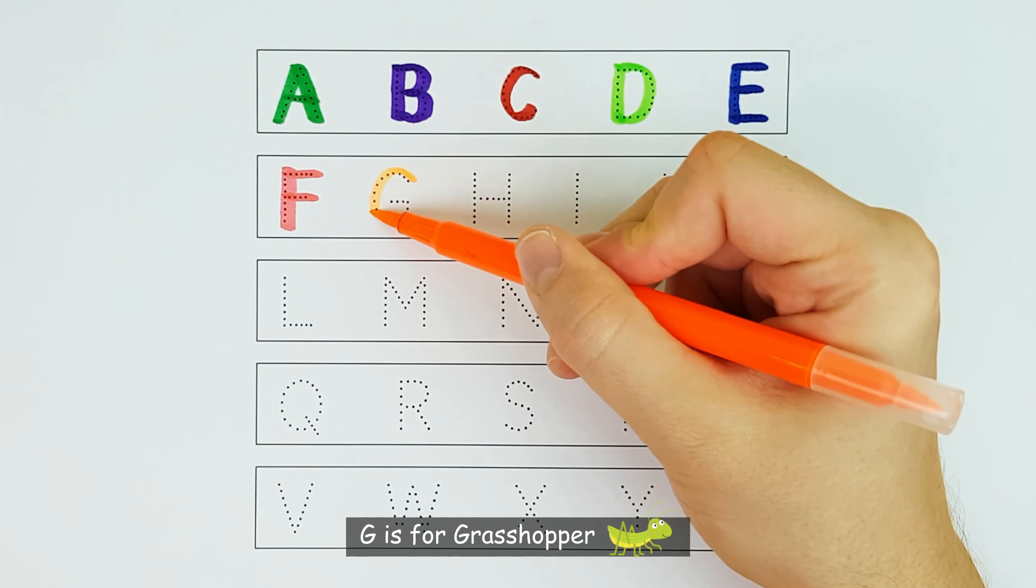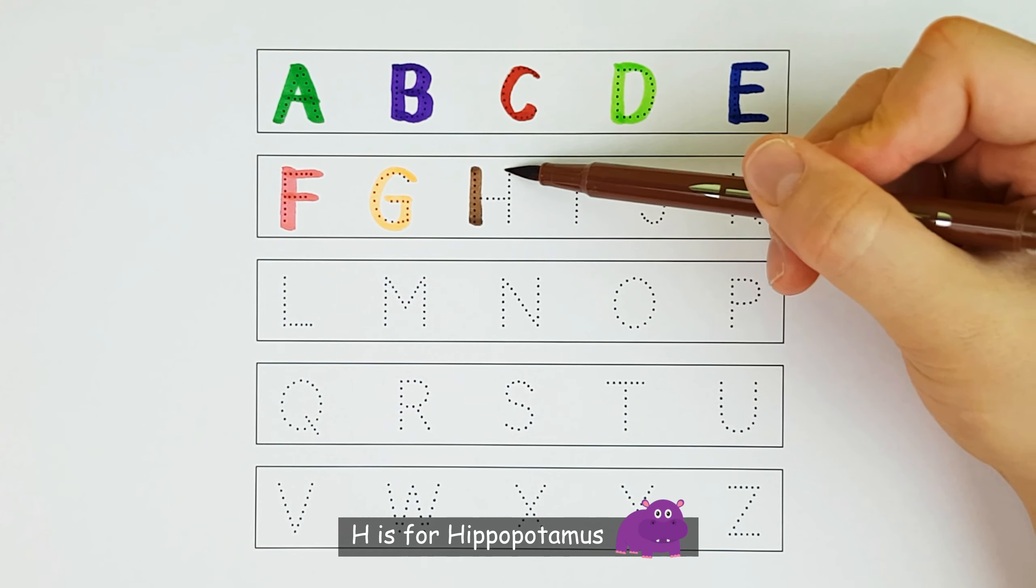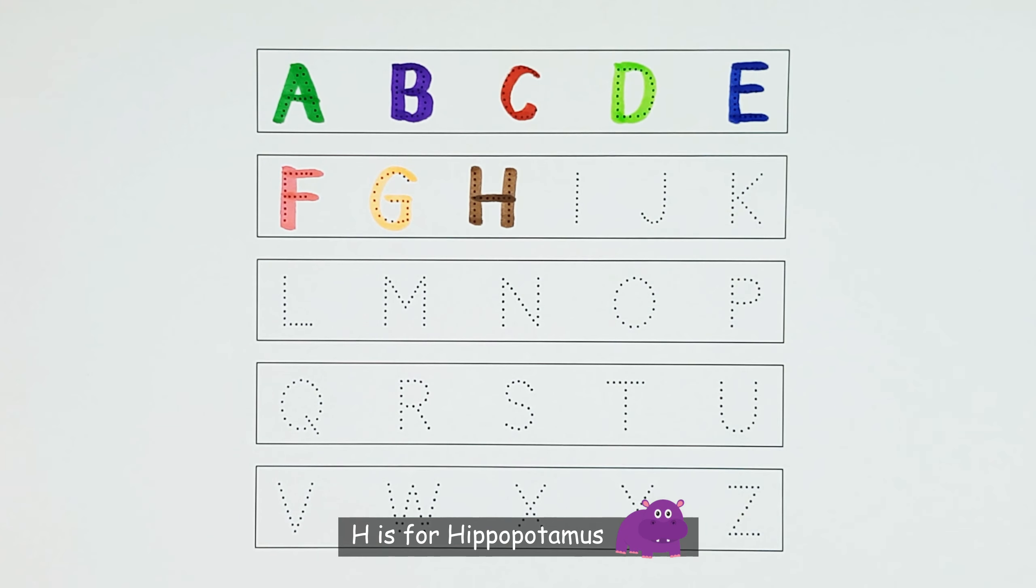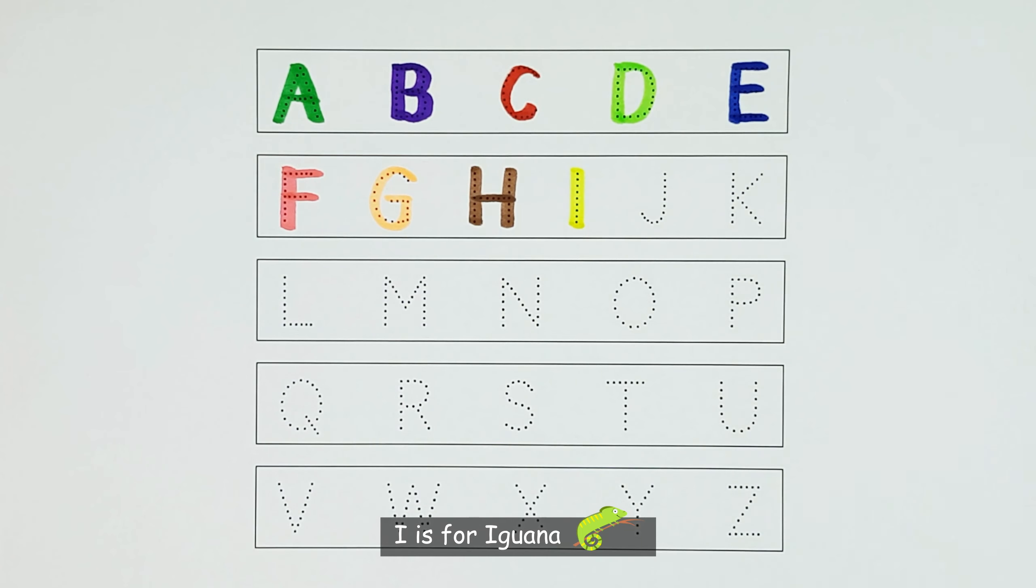G. G is for Grasshopper. G. H. H is for Hippopotamus. H. I. I is for Iguana. I.